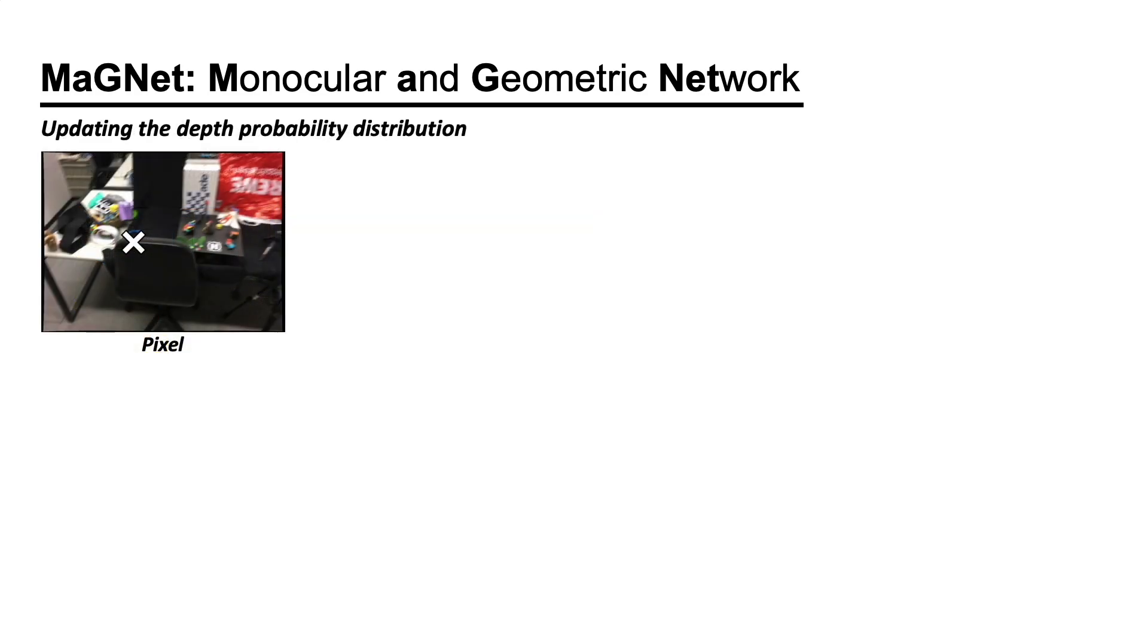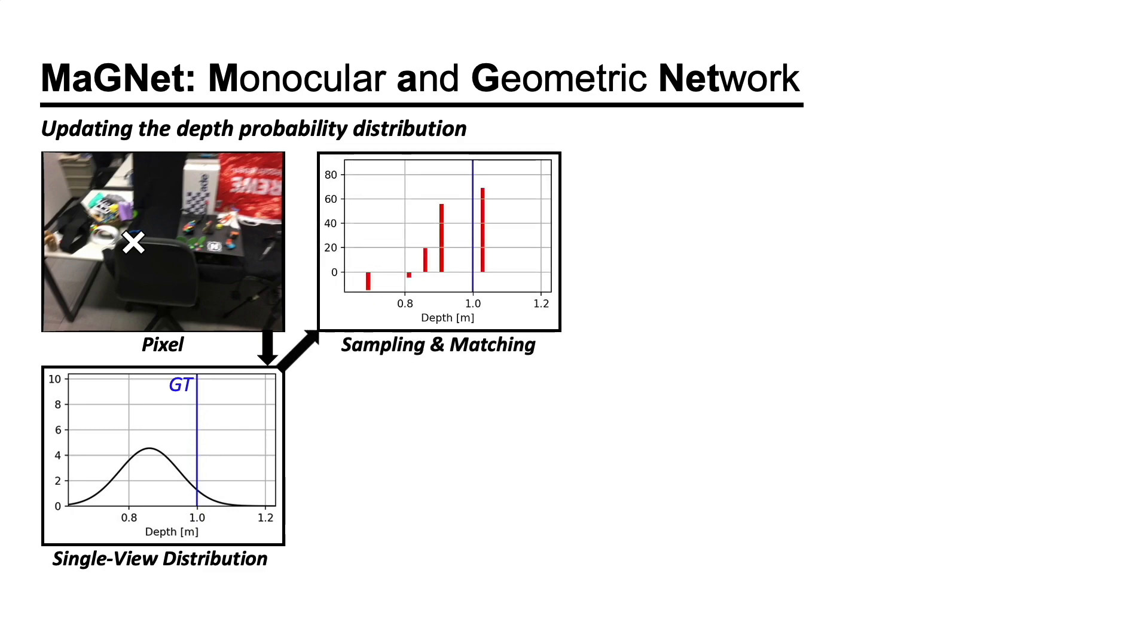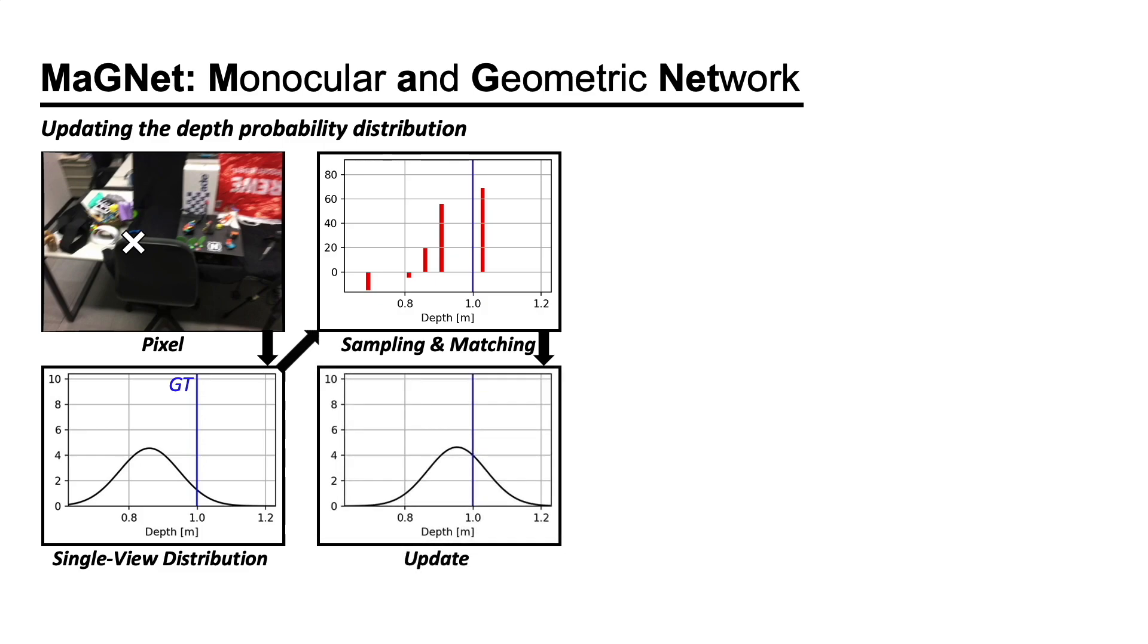Let's review the multi-view matching process. For each pixel in the reference image, we estimate the single-view depth probability distribution. Then, we sample a small number of depth candidates from that distribution and evaluate their matching scores. From this, we use a lightweight CNN to estimate the residuals of the mean and the variance. This updated distribution now contains the information from both monocular and geometric cues.